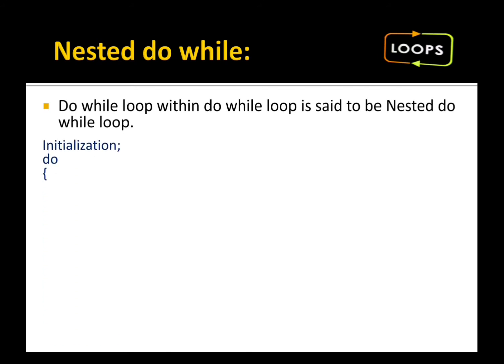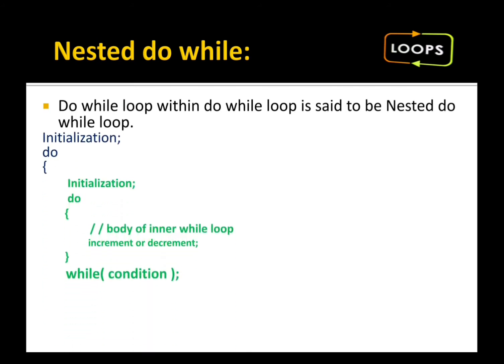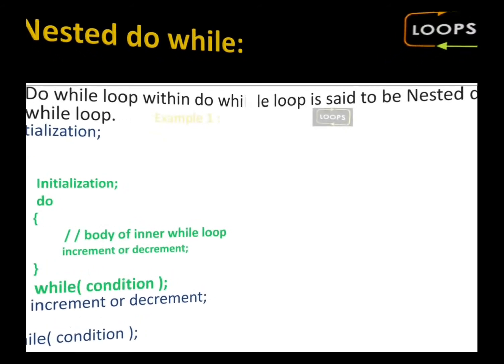In nested do-while: initialization, then do the body part where we have another do-while, then increment/decrement, and then the while condition. That is nested do-while. Now moving further with an example.